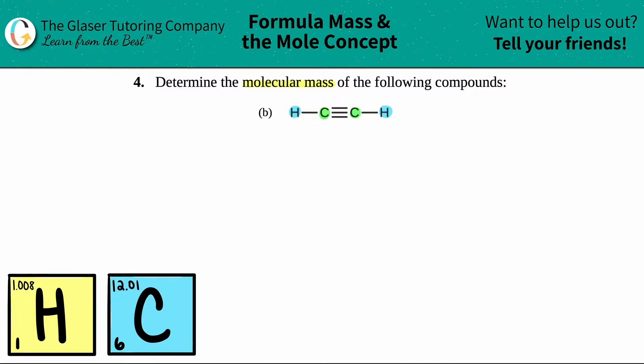So the first thing that I'm going to do is I'm just going to translate this into a chemical formula. It does not matter which element you start with, you'll still get the same molecular mass. I'm just going to start with the carbons. So how many total carbons do I have? Well, I drew two circles around the element, so I have two carbons.